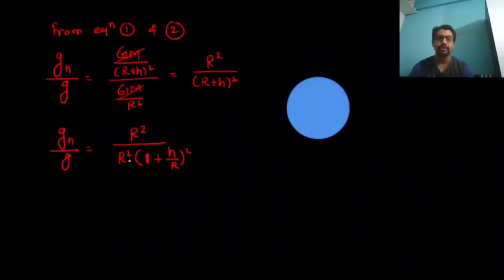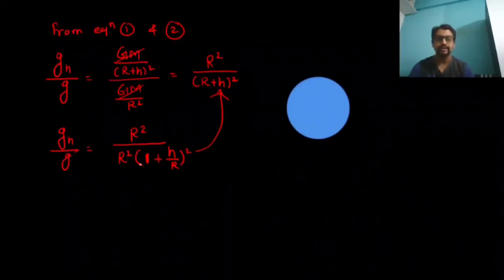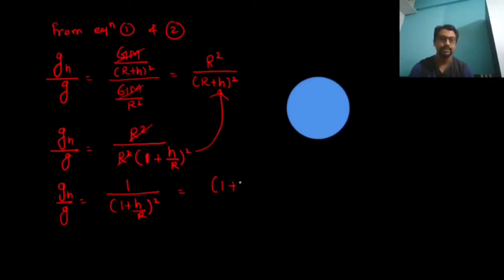When you take R outside, R² gets cancelled, and what remains is: g_h / g = 1 / (1 + h/R)², which can be written as (1 + h/R) raised to the power minus 2 because it is now in the inverse form.